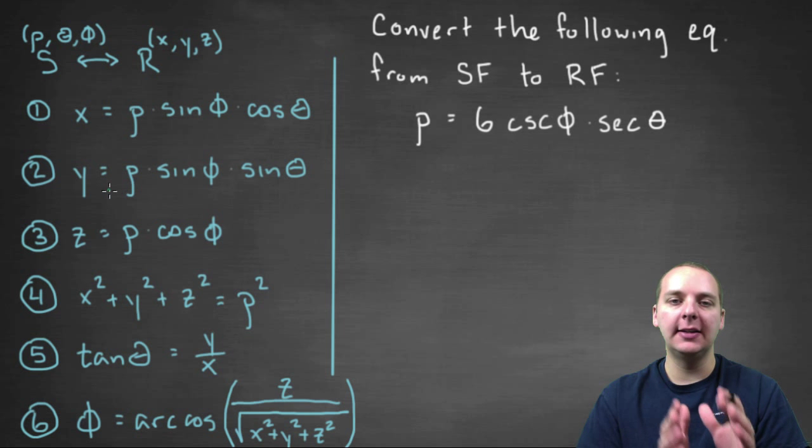Rewrite them so that you get something that fits one of your conversions, and then use that to get rid of, like in our case, rho, phi, and theta, and replace it with x, y, and z. And if we can do that, then we're done. We will have converted it to rectangular form.